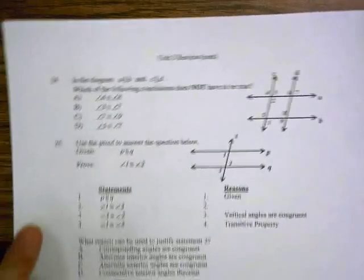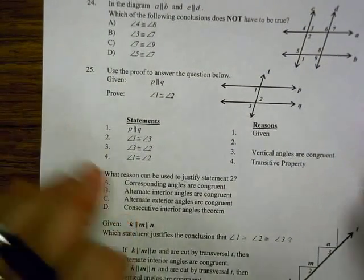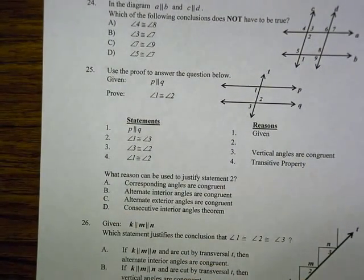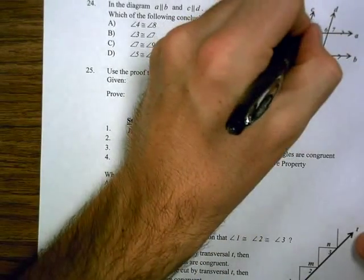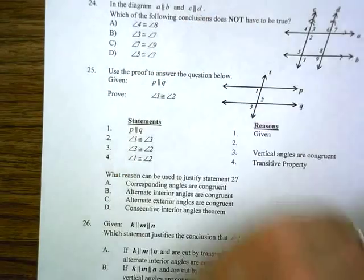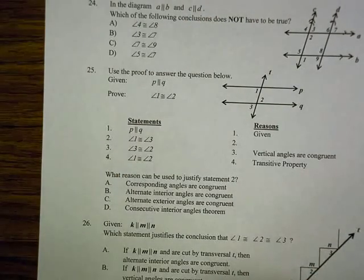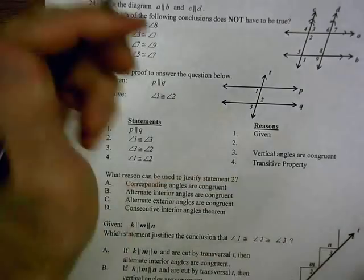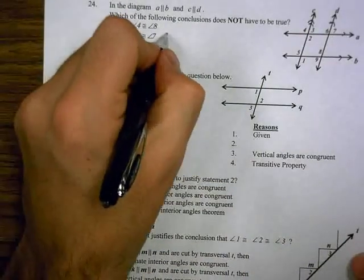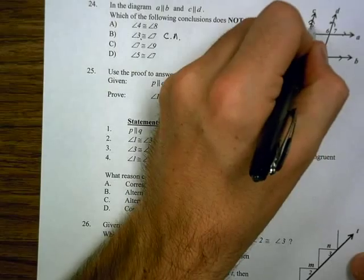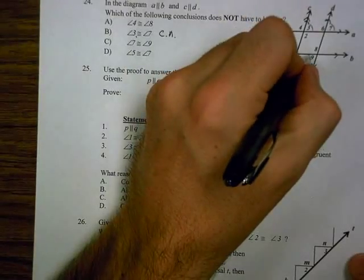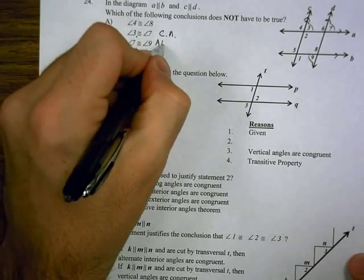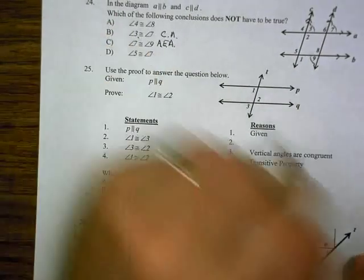Under our last page here, problem 24, we have A is parallel to B, C is parallel to D, which does not have to be true. So, we can go with some automatic ones first. Let's look at 3 and 7. 3 and 7 are corresponding angles. 7 and 9 are alternate exterior angles. So, we know those work. 5 and 7, well, those are ways apart. Let's go back to 4 and 8.